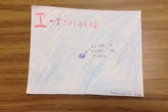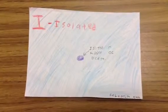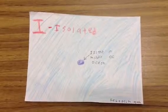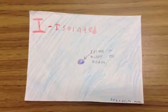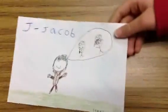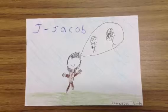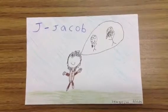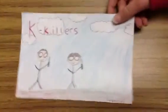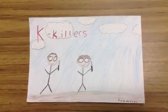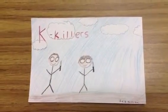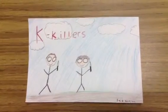I. Isolated represents this book very well. This is because the peculiar children are on a very remote island with low population. J. Jacob is the main character in this story. He is a peculiar who can see monsters. K. In this story, there are two types of killers: wights and hollows. Wights have eyes, and hollows have tentacles coming out of their mouths.